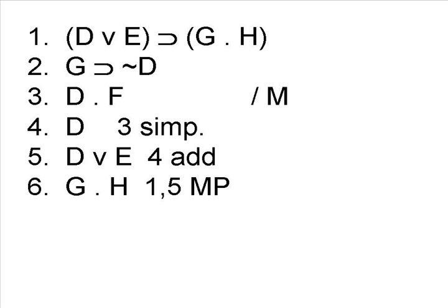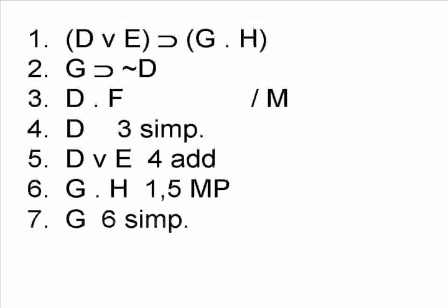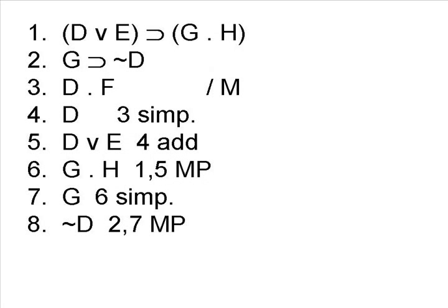Notice that G and H is a conjunction, so we can simplify to the letter G. Now the question is, what can we use the letter G for? Remember, we need to get the negation of D in order to do a disjunctive syllogism. So line 2 will allow us to do that using the rule of modus ponens. We can derive the negation of D on line 8.